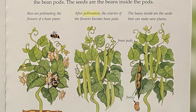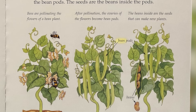After pollination, the ovaries of the flowers become bean pods. The beans inside are the seeds that can make new plants. Bean pods. Beans.